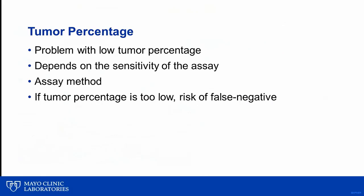As the previous slides illustrated, tissue size and cellularity are not the only metrics we need to consider — tumor percentage or percent tumor nuclei is a critical metric as well. What is acceptable varies by the test method; what may be sufficient for one assay may not be sufficient for another. The main reason we worry about this is that if the tumor percent is too low, but you have sufficient nuclei to yield enough nucleic acid to pass the test quality metric, you risk a false negative result.